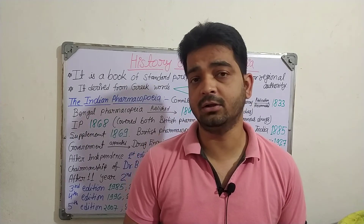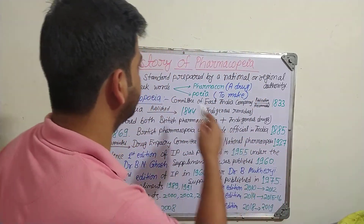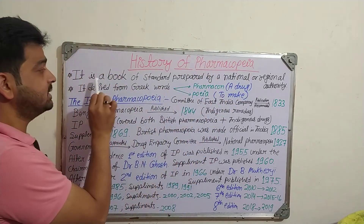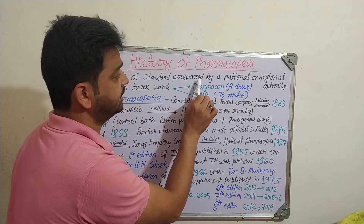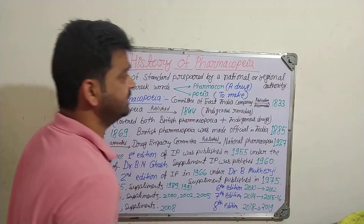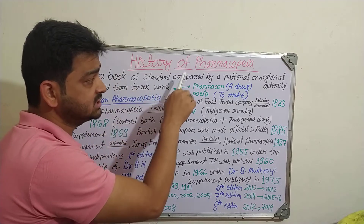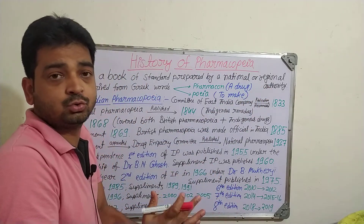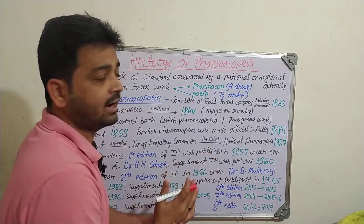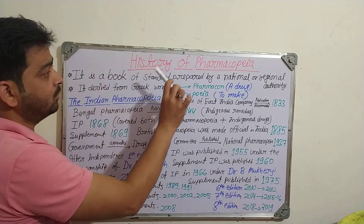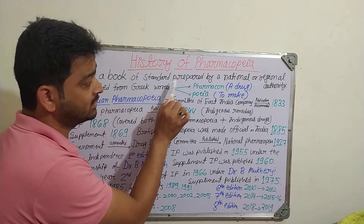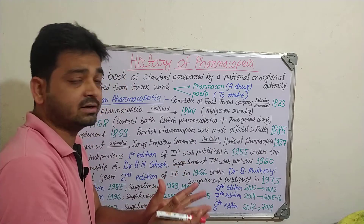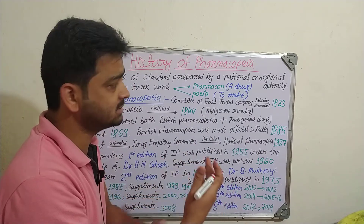Let us understand what happened in history — that is what is there in your unit one: history of pharmacopoeia. Pharmacopoeia is a book of standards prepared by a national or regional authority, published by the government or authorized bodies. The word is derived from two Greek words: 'pharmacone' meaning a drug, and 'poia' meaning to make — so it covers all the procedures and proceedings required to make a drug.